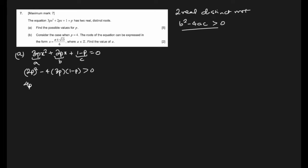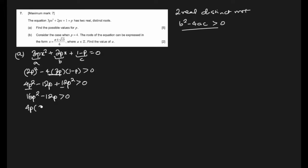Expanding: 4p² - 12p(1) + 12p² > 0, which gives 4p² + 12p² - 12p > 0, so 16p² - 12p > 0. Taking 4p as common factor: 4p(4p - 3) > 0.